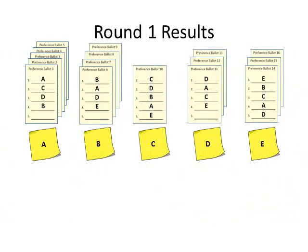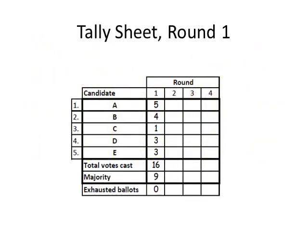Because there are 5 candidates, there are 5 stacks of ballots, one stack for each candidate. A sticky note is used to label each stack. The ballots are sorted into stacks according to the highest preference on the ballot. Each stack is counted and placed above the sticky note. The number of votes for each candidate is noted on round 1 of the tally sheet.